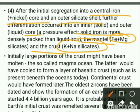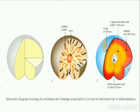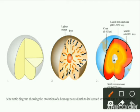Zircon is the oldest mineral and has been dated to show that the formation of the early crust started 4.4 billion years ago. A diagram shows the Earth as homogeneous without any layers just after the accretional process.